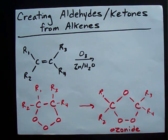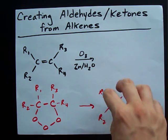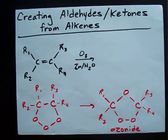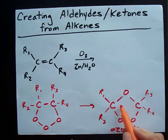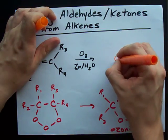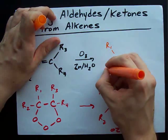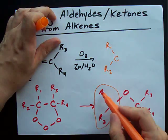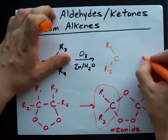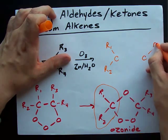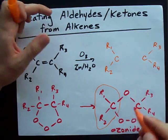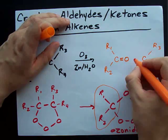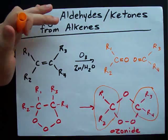This intermediate is called an ozonide. When you add zinc and water to this ozonide, the pentagon breaks apart and what you end up with is a double-bonded oxygen on each carbon. I'm going to keep this carbon attached to R1 and R2, and this carbon attached to R3 and R4 — but notice I've gotten rid of my three oxygens. The final product has a double-bonded oxygen on each carbon.